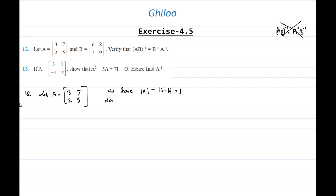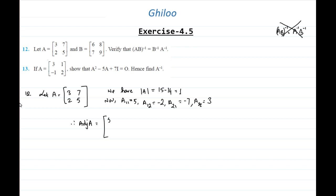Now A₁₁ is equal to 5, A₁₂ is equal to minus 2, A₂₁ is equal to minus 7, and A₂₂ is equal to 3. How to find cofactors — I discussed it very clearly in the previous videos. Therefore, the adjoint of A equals the transpose of the cofactor matrix, which is [5, -7; -2, 3].